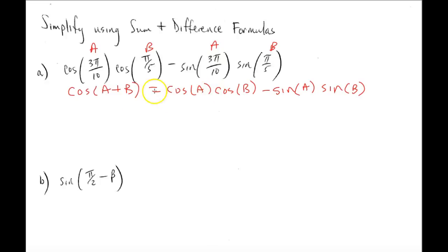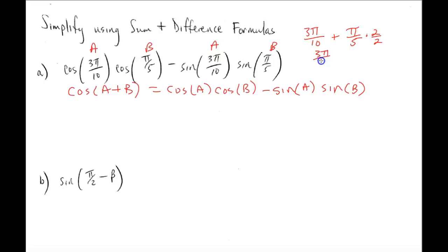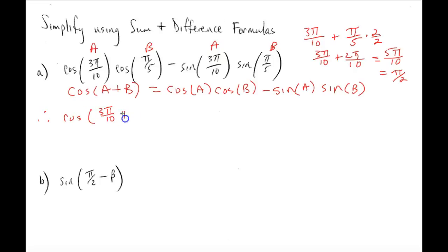Since we're going to add these together, let's figure out what 3π/10 plus π/5 equals. We need a common denominator, so we multiply numerator and denominator of π/5 by 2, giving us 3π/10 plus 2π/10, which equals 5π/10. Reducing that, we get π/2. So cosine of 3π/10 plus π/5 equals cosine of π/2.